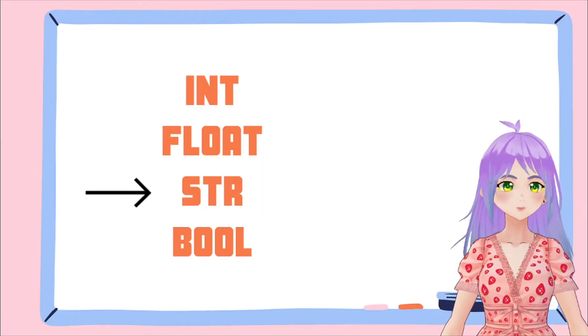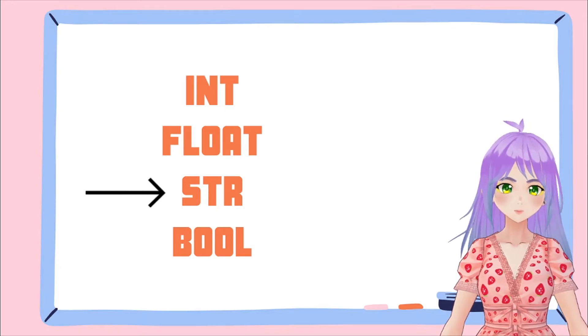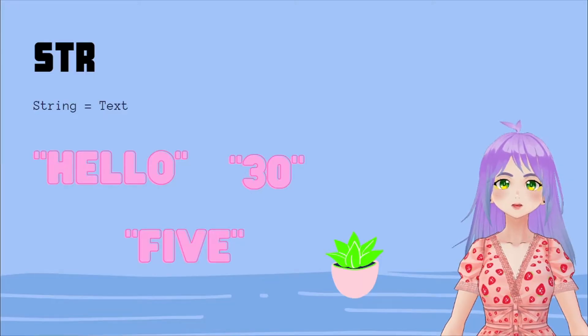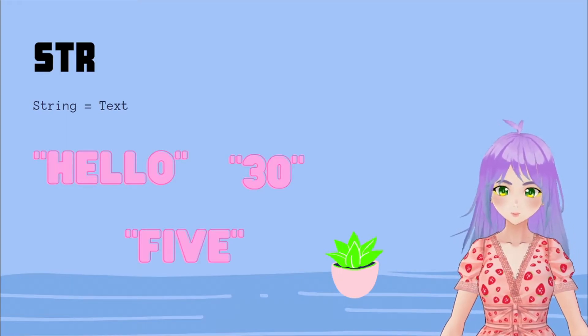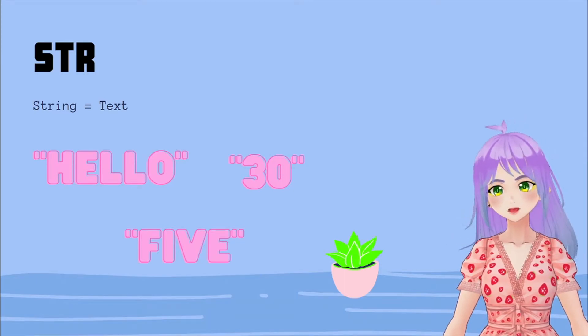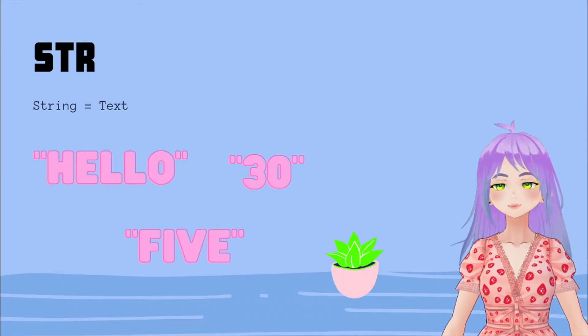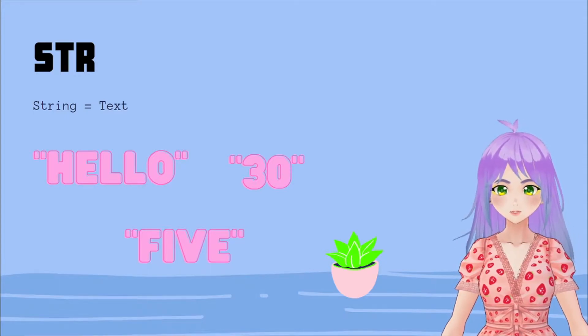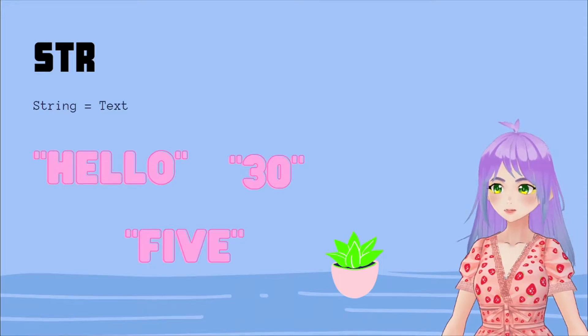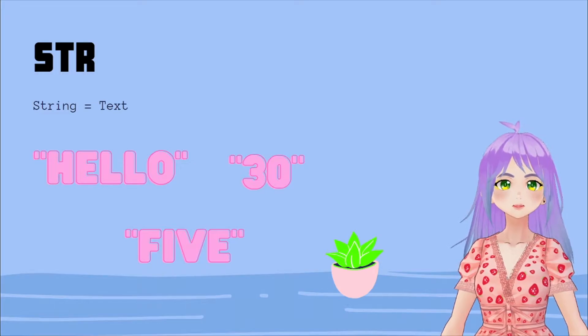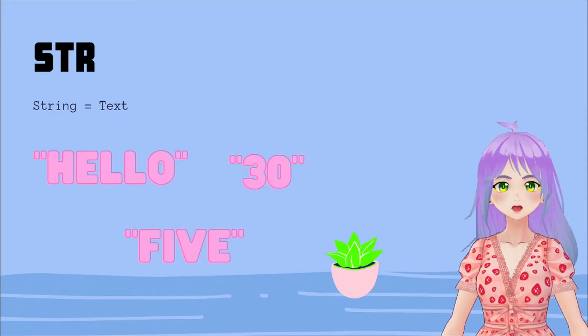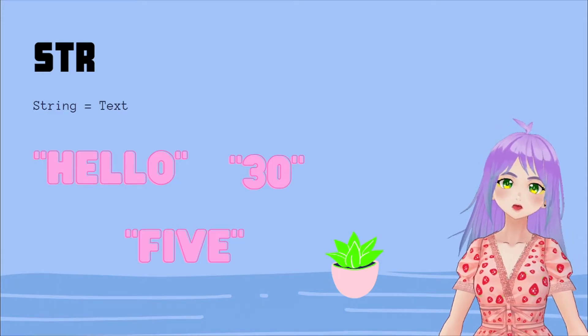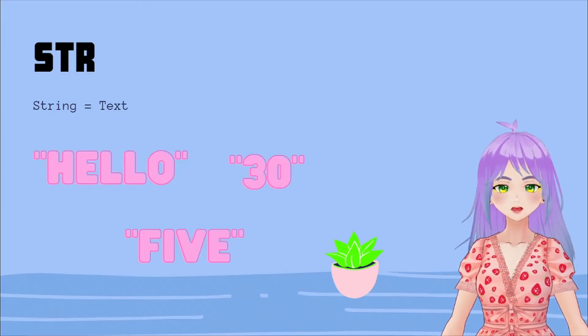The third type of data that I want to talk to you about is str. str is the short for a string, and this is pretty much text data. In Python, all of the text data always goes between quotation marks. For example, we have hello, 5, and even the number 30 in quotation marks. So it is really important to highlight that every character that you put in quotation marks, Python is going to take it as string data.